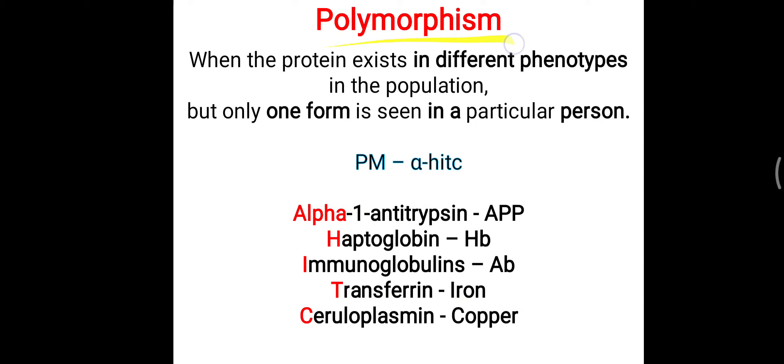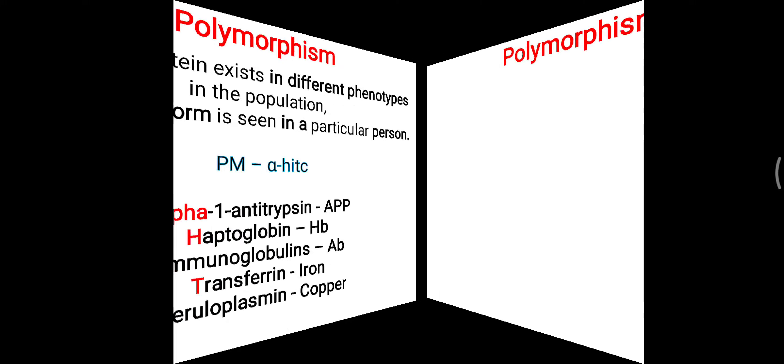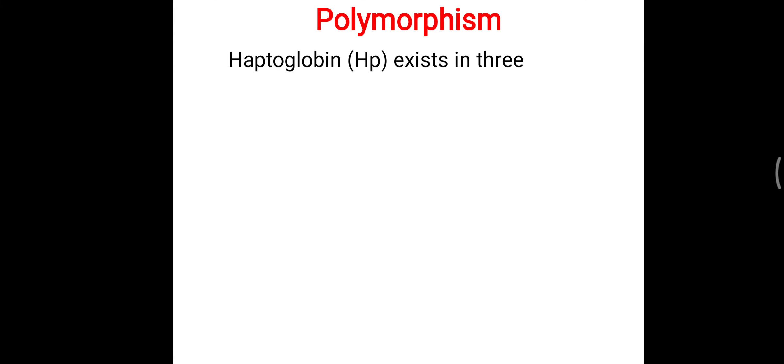All five of these proteins are typically found in polymorphism — they have different phenotypical forms, but in one particular person, only one particular type of protein is present.